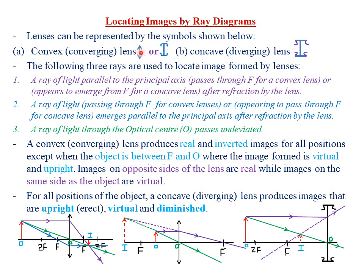In a ray diagram, these are the symbols we use to represent a convex lens, which is also called a converging lens. They are called converging lenses because they converge the rays of light after refraction on those lenses. For example, we have some incident rays here, and upon refraction they are being converged or brought together at a common point — hence convex lenses are also called converging lenses.